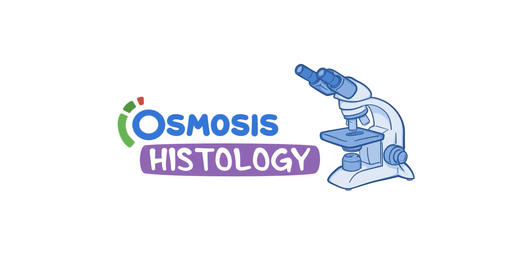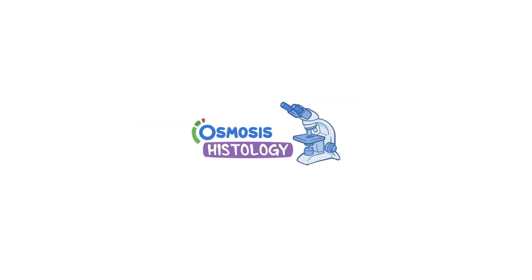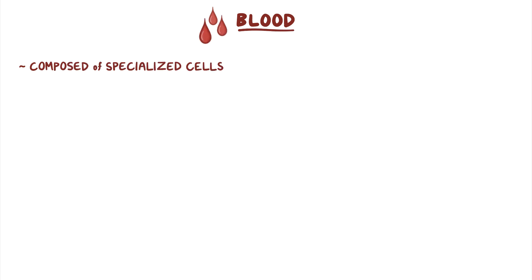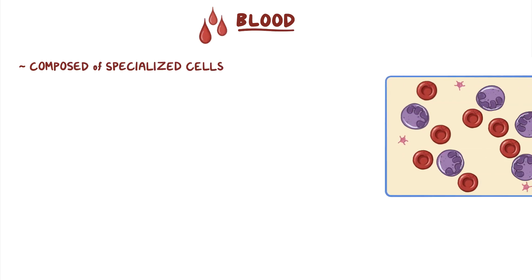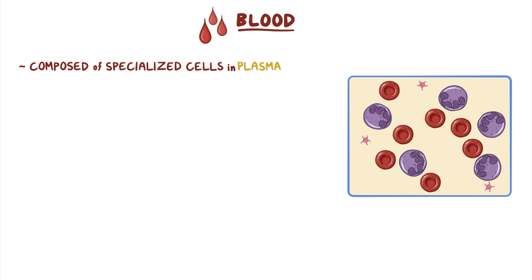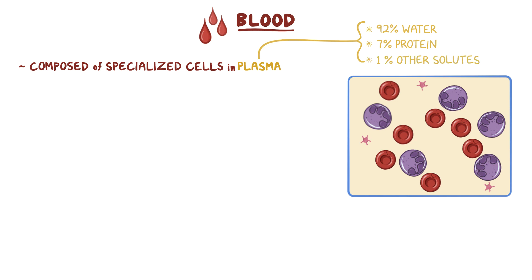Now, let's get a closer look. Blood is composed of specialized cells that circulate in an extracellular fluid called plasma. Plasma typically consists of about 92% water, 7% protein, and 1% is a combination of other solutes.